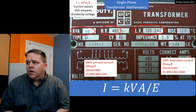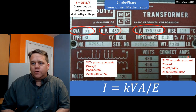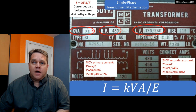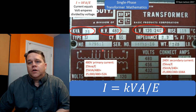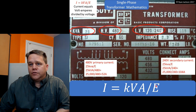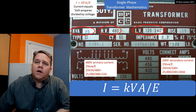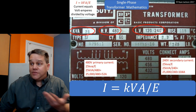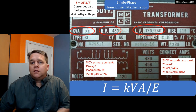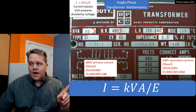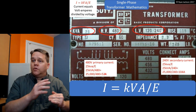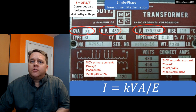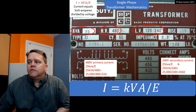First, transformer mathematics. Transformers don't have a current rating per se — they have a power rating in kVA. Current equals kVA divided by voltage: I = kVA / E. For a 25 kVA transformer with a high-voltage side of 480, take 25,000 volt-amps divided by 480 — that gives 52 amps on that side. If the secondary is at 240, then 25,000 divided by 240 gives 104 amps.